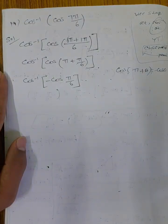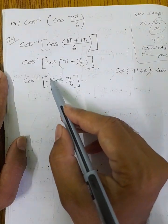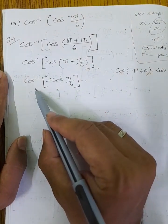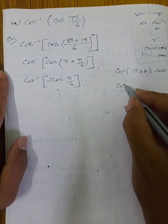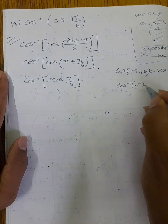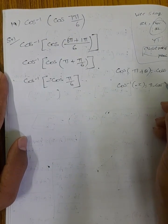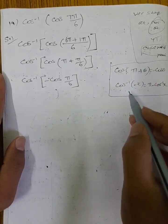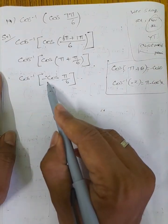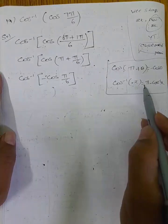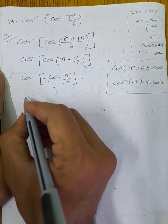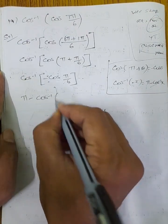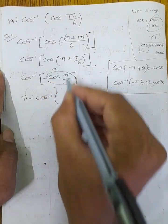We have cos inverse of (minus cos θ). We need to use the formula: cos inverse of (minus x) = π minus cos inverse of x. So cos inverse of (minus cos(5π/6)) = π minus cos inverse of cos(5π/6).